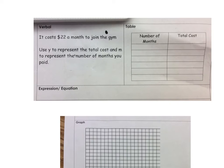Now we're going to look at another example here. Again, representing a situation in a variety of ways. So verbal, it costs $22 a month to join a gym. Use Y to represent the total cost, and M to represent the number of months you paid. So again, you're going to start down here with your expression equation. So you're saying that Y is the total cost, and that's going to equal the number of months times 22 a month. So it's 22M in this case.